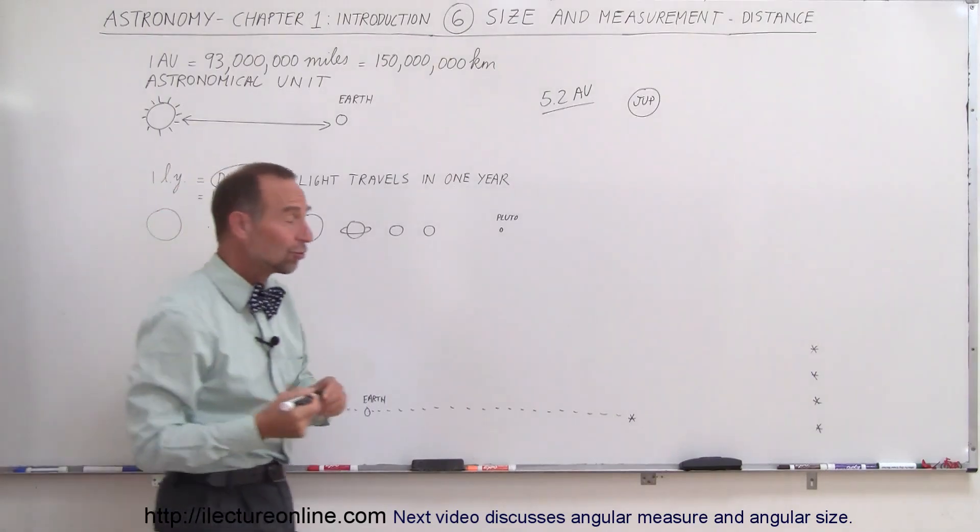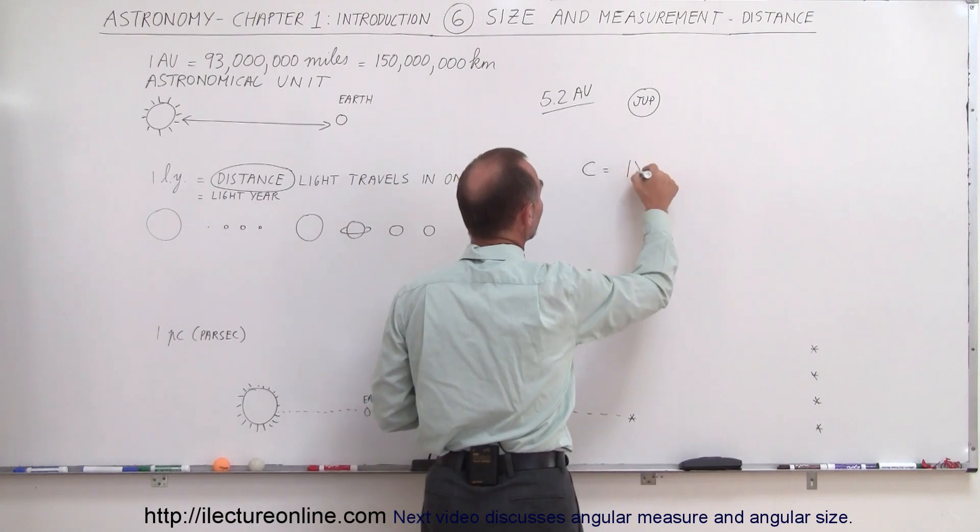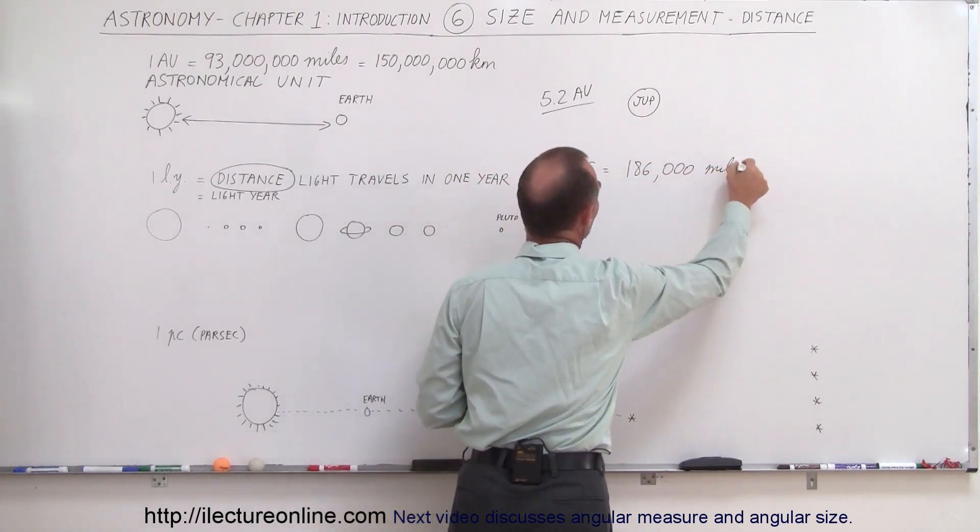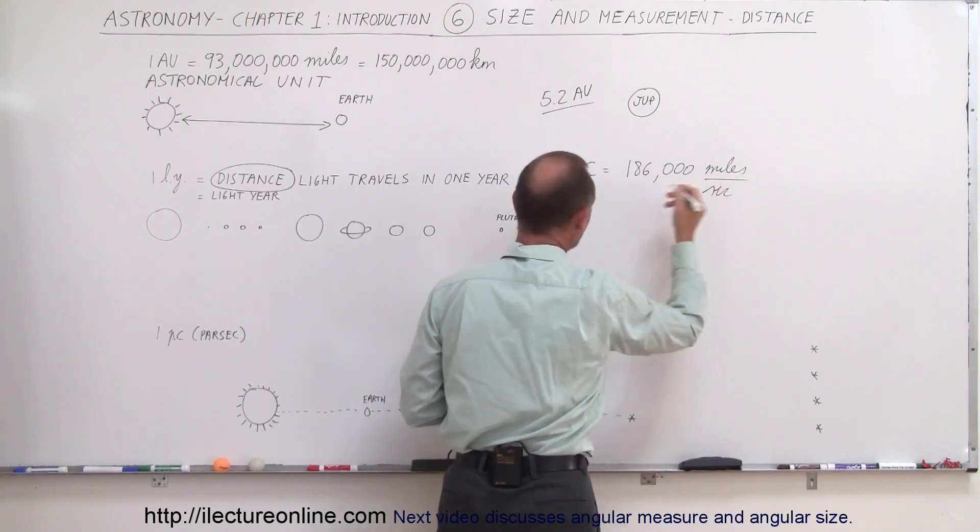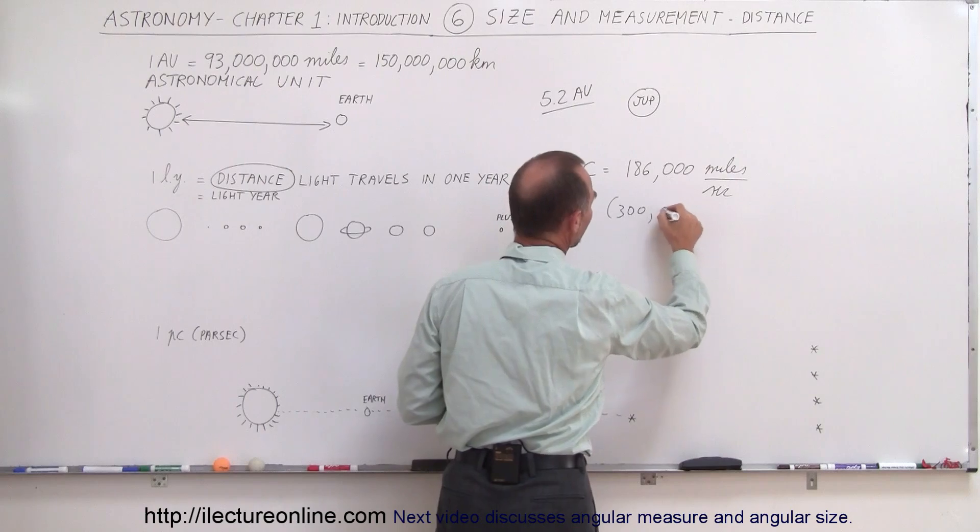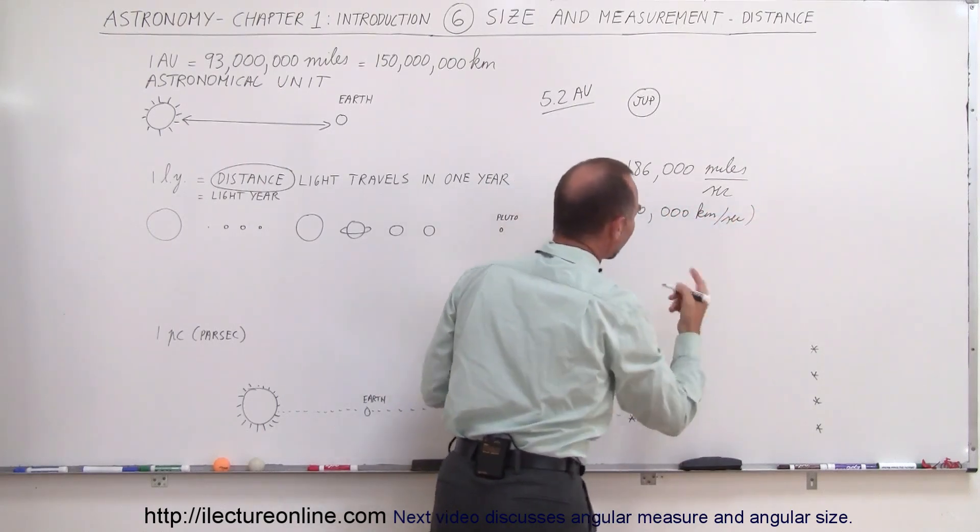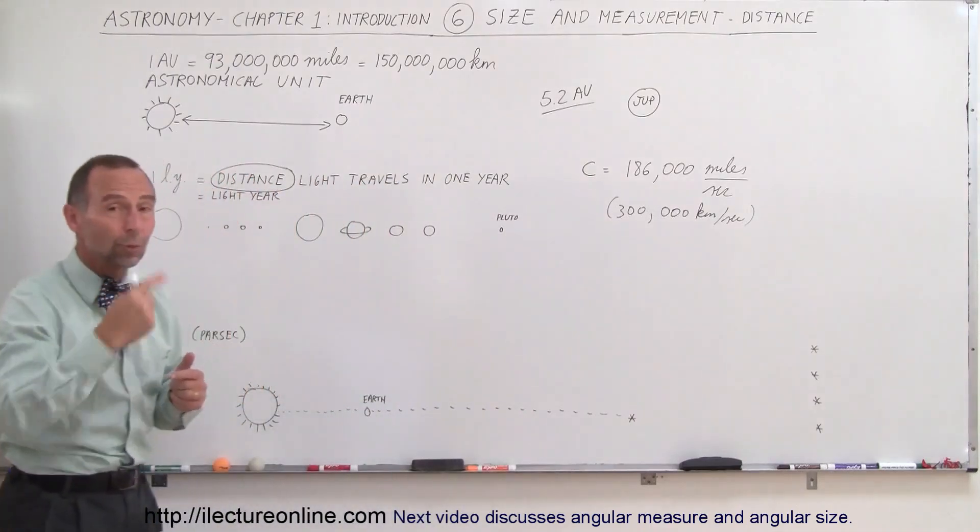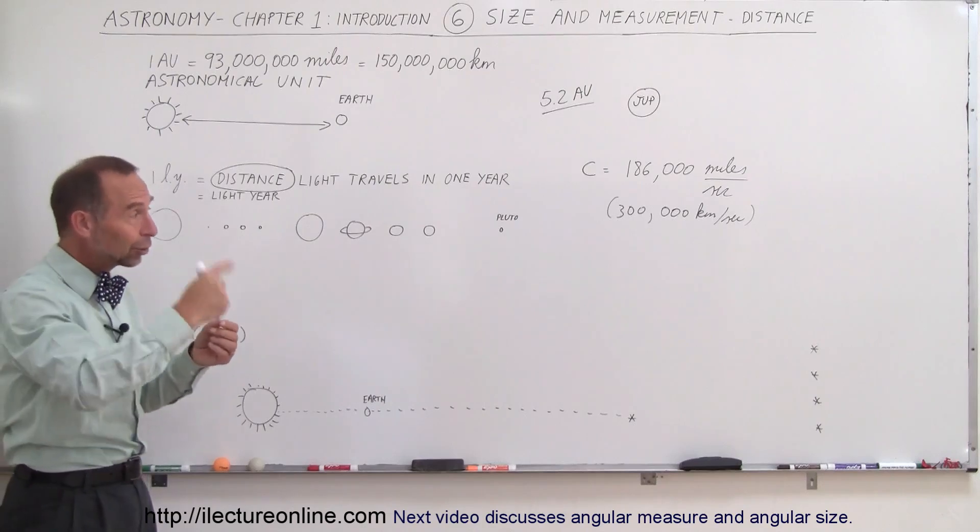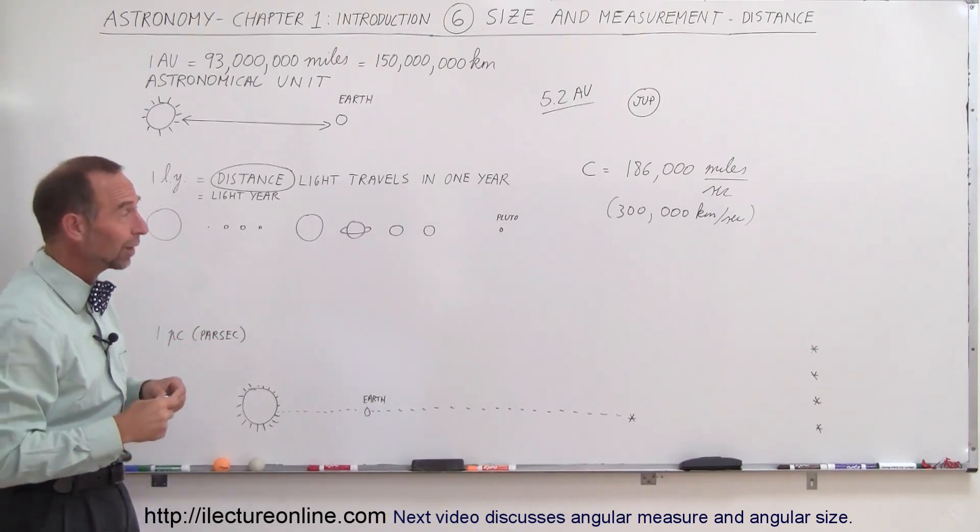So how far does light travel in a year? Well, it turns out light travels, the speed of light, we use a small letter C to indicate that, the speed of light is 186,000 miles per second. That's quite a ways in one second. Also, in SI units, it's 300,000 kilometers per second. So 300,000 kilometers is seven and a half times around the world. Now, of course, light doesn't travel in a circular path, but if it could, it could go around the Earth seven and a half times in a single second. So that's moving along quite fast.